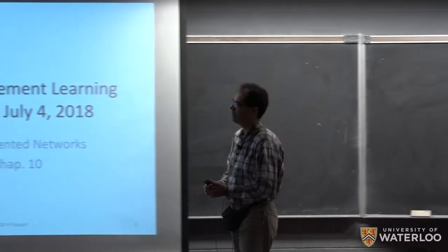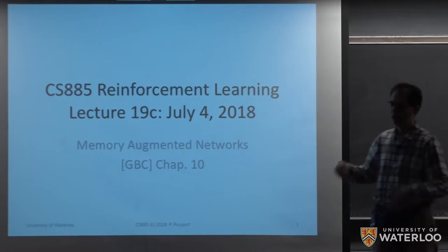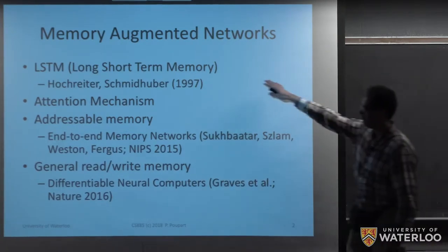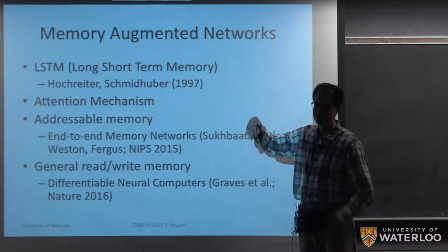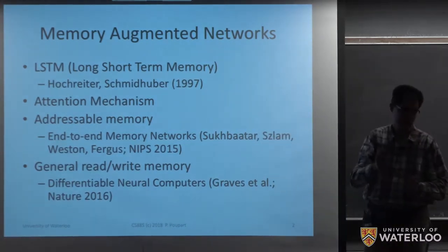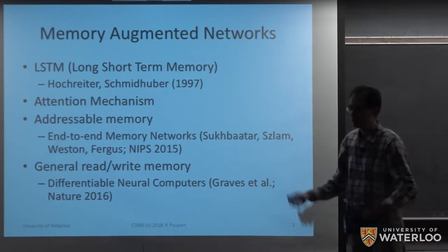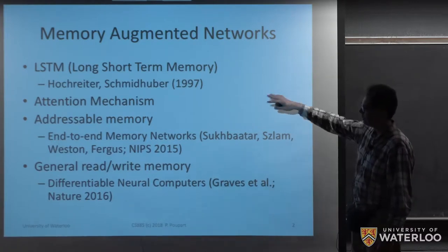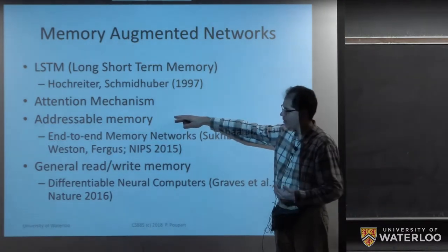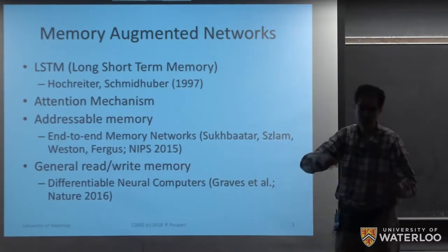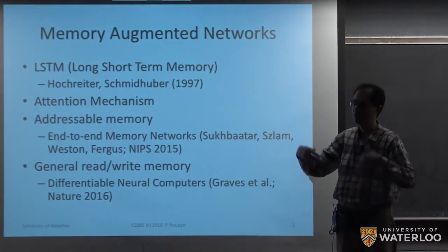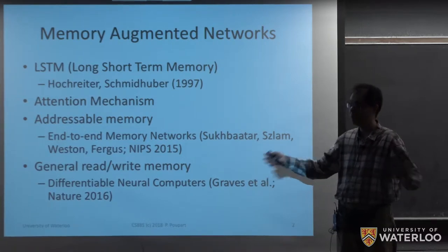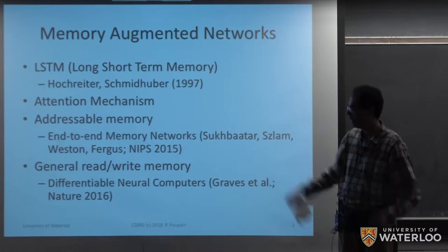Let's resume. What I'm going to do next is introduce some material regarding memory networks in the context of reinforcement learning. We've already covered long-term memory networks — a classic type of network that uses a very simple type of memory. But there are more elaborate types of networks. We're going to talk about ways of addressing a memory and how to read and write into external memories in a differentiable way, so that we can do end-to-end learning through those read and write operations.